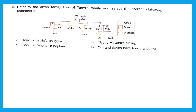Option C: Sonu is Kanchan's nephew. If someone is someone's nephew, Sonu should be Kanchan's brother's or sister's son. Sonu is Tani and Mayang's son, and Kanchan is Tani's sister — so Kanchan should be Sonu's aunt and Sonu should be Kanchan's nephew. That is correct; option C is the right answer. Option D: Om and Savita have four grandsons — incorrect, they have two grandsons and two granddaughters.